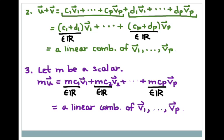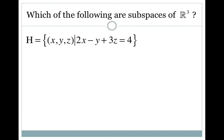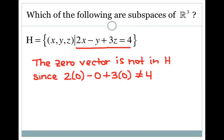Now let's look at a few more examples. We want to know which of the following are subspaces of R3. The first one: H is all the points (x, y, z) that meet the condition 2x minus y plus 3z equals 4. Let's start with the zero vector — it's not in H because it does not meet the condition: 2(0) minus 0 plus 3(0) is not equal to 4. So I can automatically say this H is not a subspace of R3.